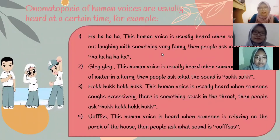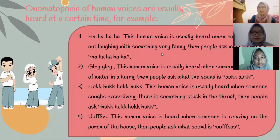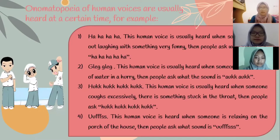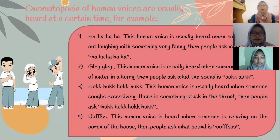Onomatopoeia of human voices are usually heard at certain times. For example: first, this human voice is usually heard when someone bursts out laughing at something very funny — then people ask what sound it is. Second, 'glug glug glug' — this human voice is usually heard when someone drinks a large amount of water in a hurry — the sound is glug glug glug. Third, this human voice is usually heard when someone coughs excessively or has something stuck in the throat. And the last one, this human voice is heard when someone is relaxing on the porch of the house.